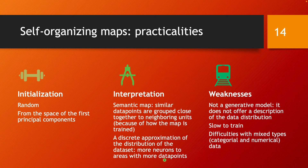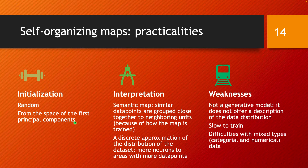There are several practicalities to mention for self-organizing maps. One concerns the initialization of node weights — you can initialize them to random points or random points from the training dataset. However, a faster-learning alternative is to initialize them from the space of the first principal components of your data. You would first run PCA on the dataset, then choose the node weights from that principal component space.